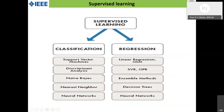In supervised learning, there are two categories: classification and regression. Classification means dividing information into groups based on properties in the dataset — for example, classifying students by gender. Regression finds the relationship between independent and dependent variables, such as y = mx + c. This presentation focuses on the classification method using the Naive Bayes classifier.